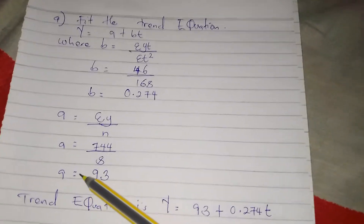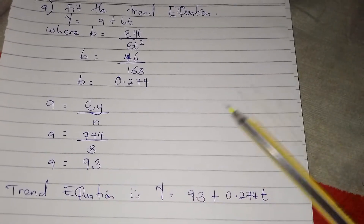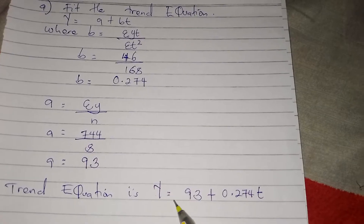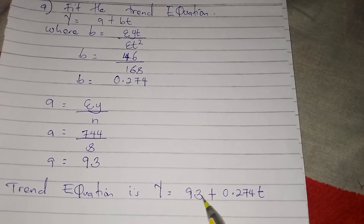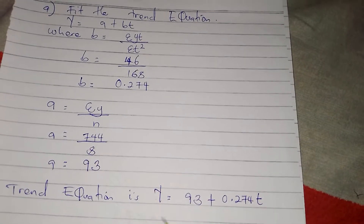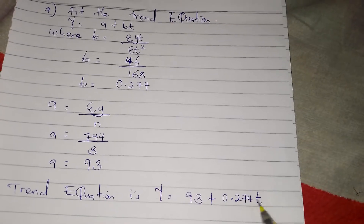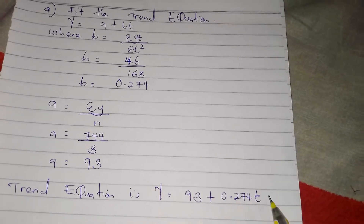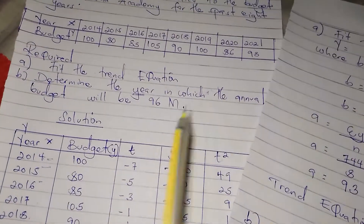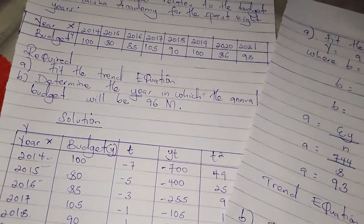After getting the values of a and b, we substitute into the equation: Y = 93 + 0.274T. This is the trend equation they asked for in part (a): fit the trend equation. So this answers part (a).